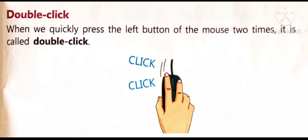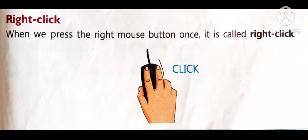Double click. When we quickly press the left button of the mouse two times, it is called double click. Right click. When we press the right mouse button once, it is called right click.